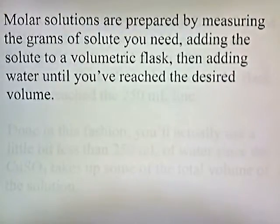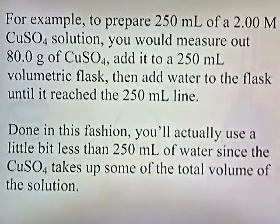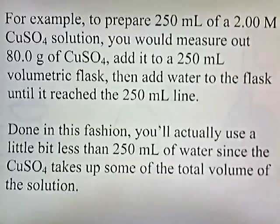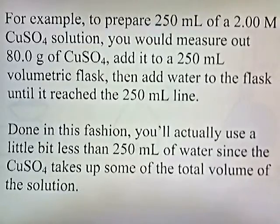Solutions are prepared by measuring the grams of solute you need, adding the solute to a volumetric flask, and then adding water until you've reached the desired volume. For example, to prepare 250 milliliters of a 2 molar CuSO₄ solution, you would measure out 80 grams of copper sulfate, add it to a 250 milliliter volumetric flask, and add water until it reaches the 250 milliliter line. Note that you'll actually use a little less than 250 milliliters of water since the copper sulfate takes up some of the total volume.